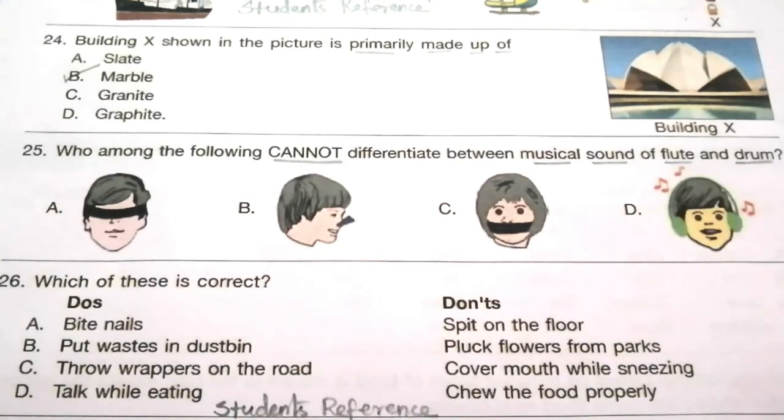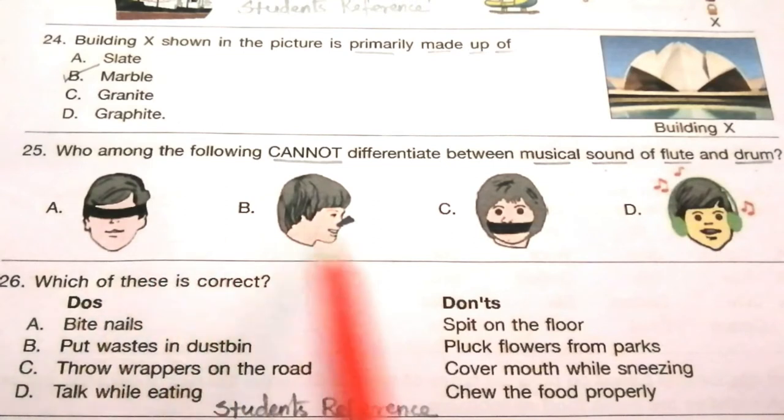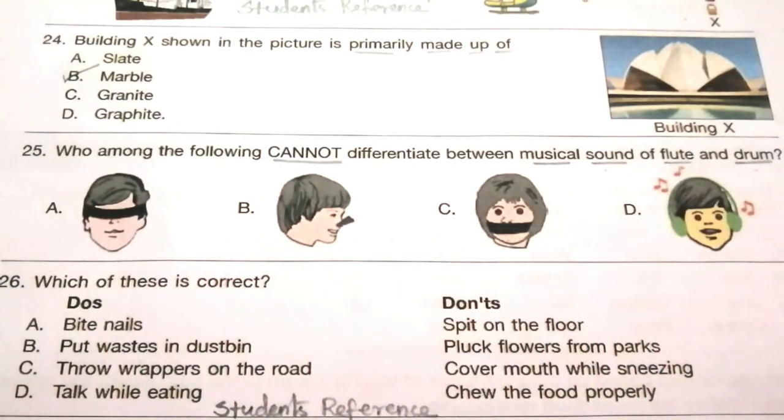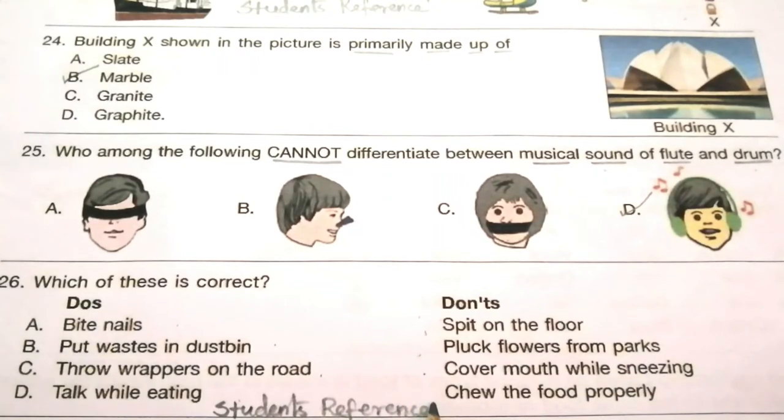Question 25: Who cannot differentiate between musical sound of flute and drum? The answer is D. Question 26: Which is correct? Do's and Don'ts: bite nails, put wastes in dustbin, talk while eating, spit on the floor, cover mouth while sneezing, chew food properly. The correct answer is put wastes in dustbin and pluck flowers from plants.